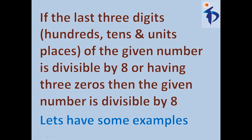If the last three digits — hundreds, tens, and units place — of the given number is divisible by 8, or having three zeros, then the given number is divisible by 8. Let's have some examples now.